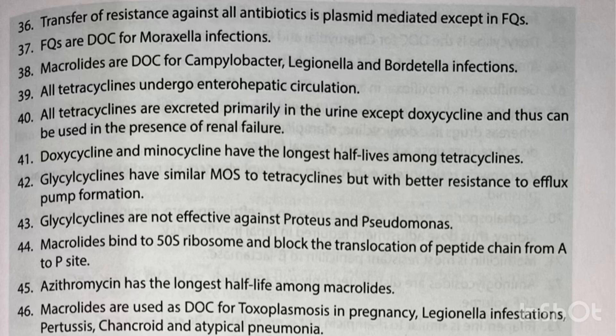All tetracyclines undergo enterohepatic circulation. All tetracyclines are excreted primarily in the urine except doxycycline, and thus doxycycline can be used in the presence of renal failure. Doxycycline and minocycline have the longest half-lives among tetracyclines. Glycylcyclines have a similar mechanism of action and structure to tetracyclines but with better resistance to efflux pump formation. Glycylcyclines are not effective against Proteus and Pseudomonas.